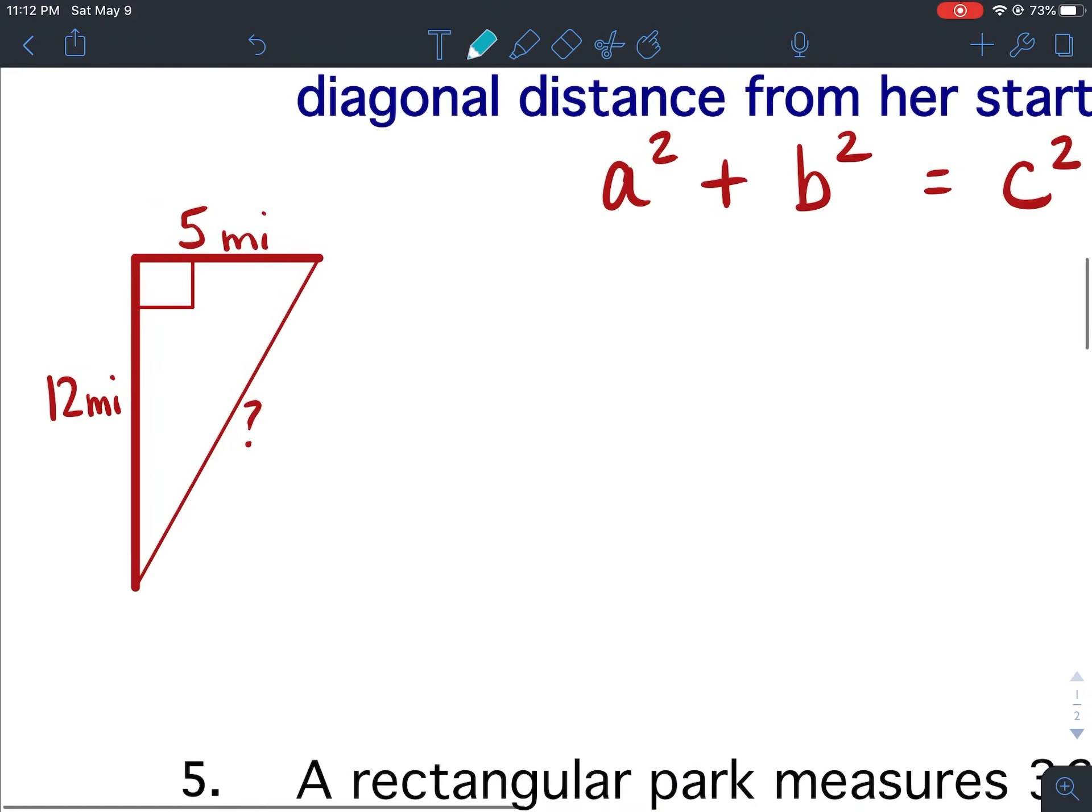All right so the right angle points to C so you are finding the hypotenuse. All right let's call the shorter length A and the longer length B.